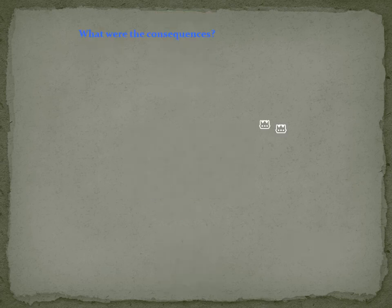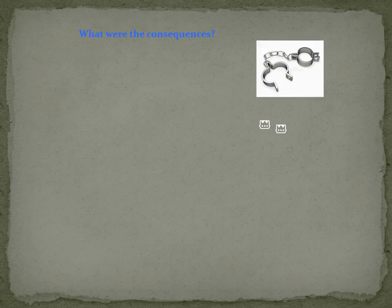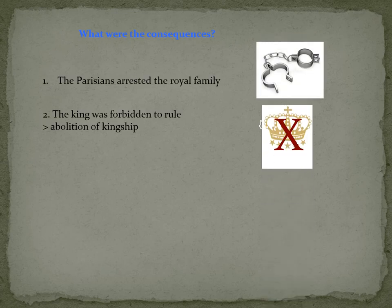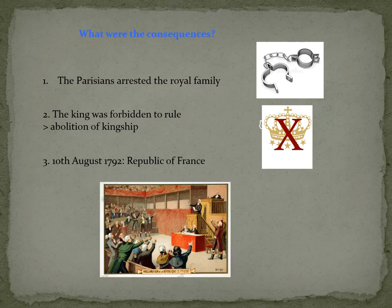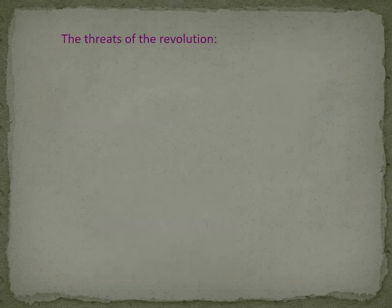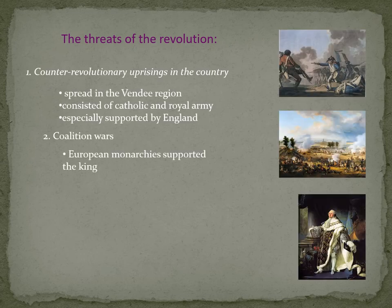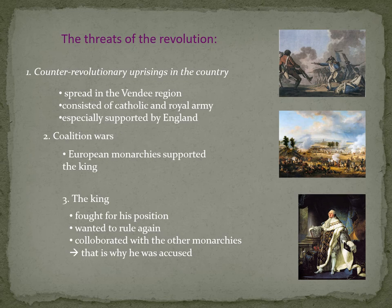As consequences, the Parisians arrested the royal family, and the king was forbidden to rule. On the 10th of August 1792, the Declaration of the Republic took place. The Parisian Commune and the National Assembly gained control of the revolution. In summer 1792, the revolution was threatened by counter-revolutionary uprisings inside the country, coalition wars, and the king himself.